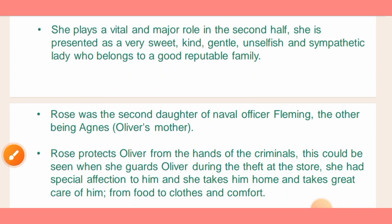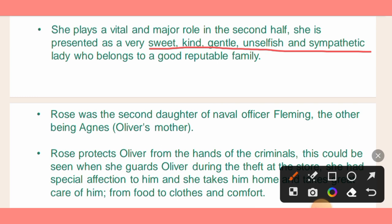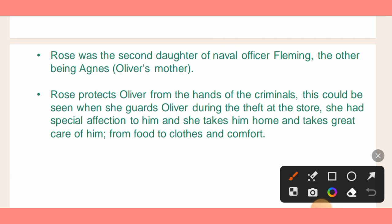After her introduction, Rose plays a vital and major role in the second half of the novel. She is very sweet, kind, and gentle. When you read the novel you can see that she was very gentle, unselfish, and sympathetic, and she belonged to a very good family — originally the family of Agnes Fleming and Oliver in London. We also find that Rose was actually the second daughter of the same family, making her Agnes Fleming's sister and therefore Oliver's aunt.